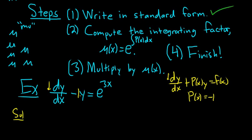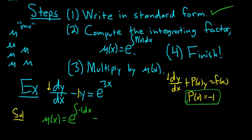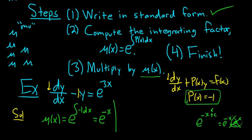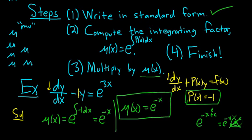Step 2: compute the integrating factor mu of x. We established that P(x) = -1, so mu of x = e^(integral of -1 dx). Integrating -1 gives -x, so mu of x = e^(-x). Don't worry about the constant of integration — you don't need it, because when you multiply by mu of x, adding a constant of integration just introduces a factor of e^c that divides away. So mu of x = e^(-x).